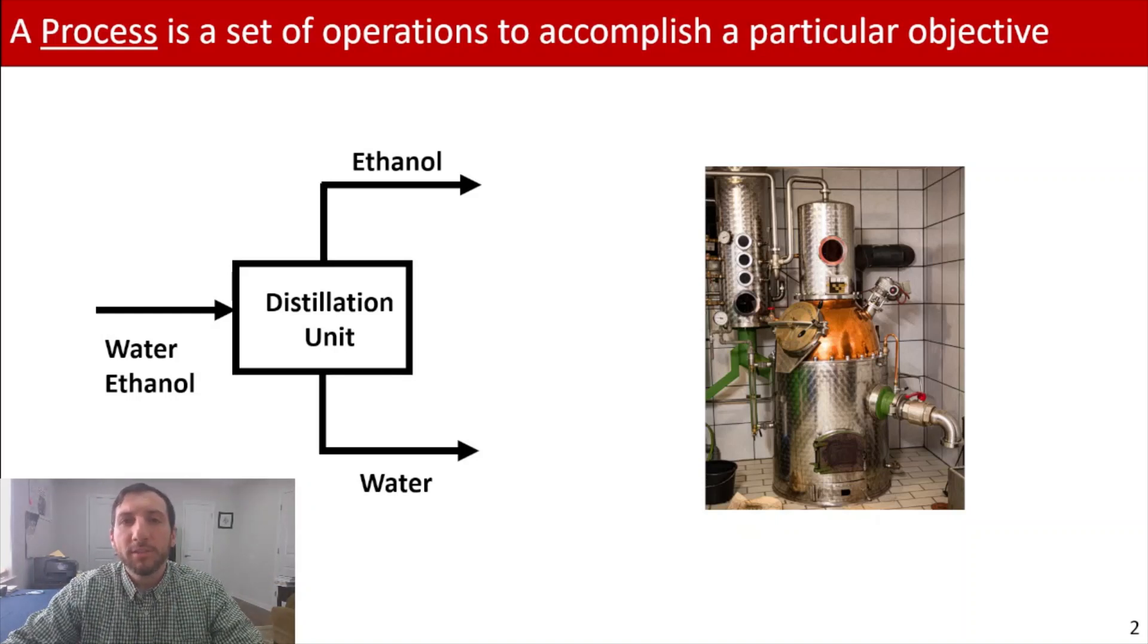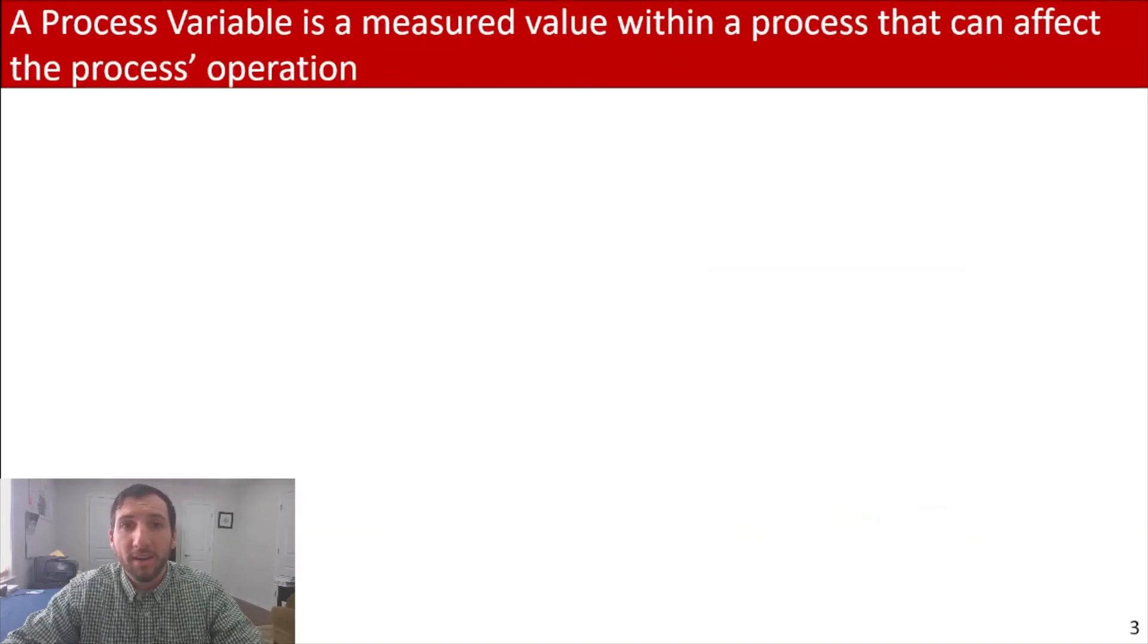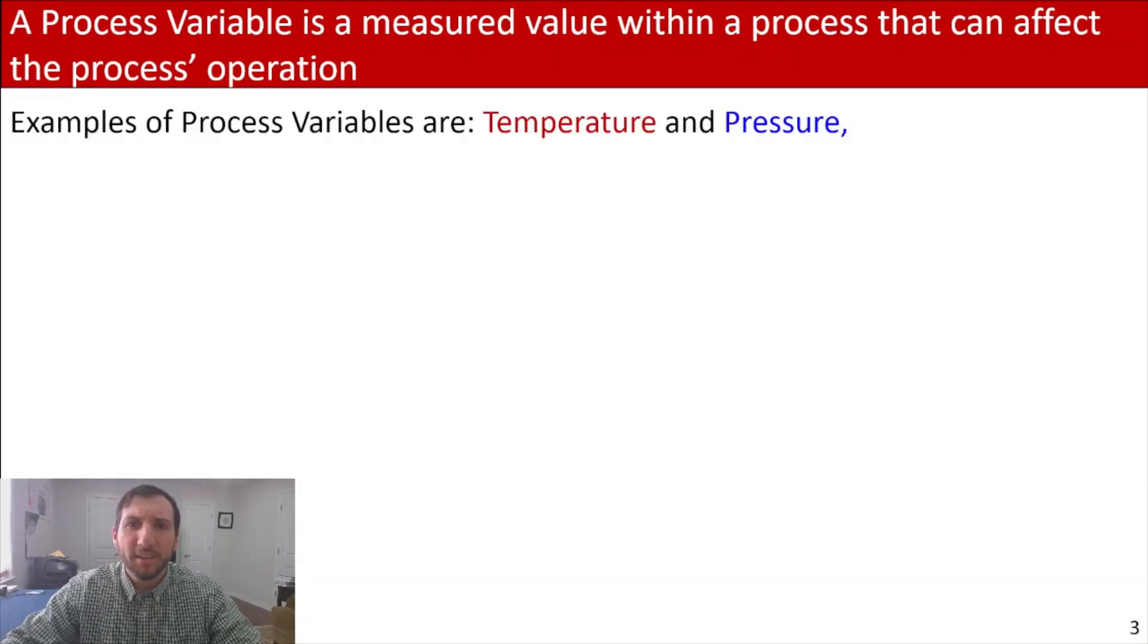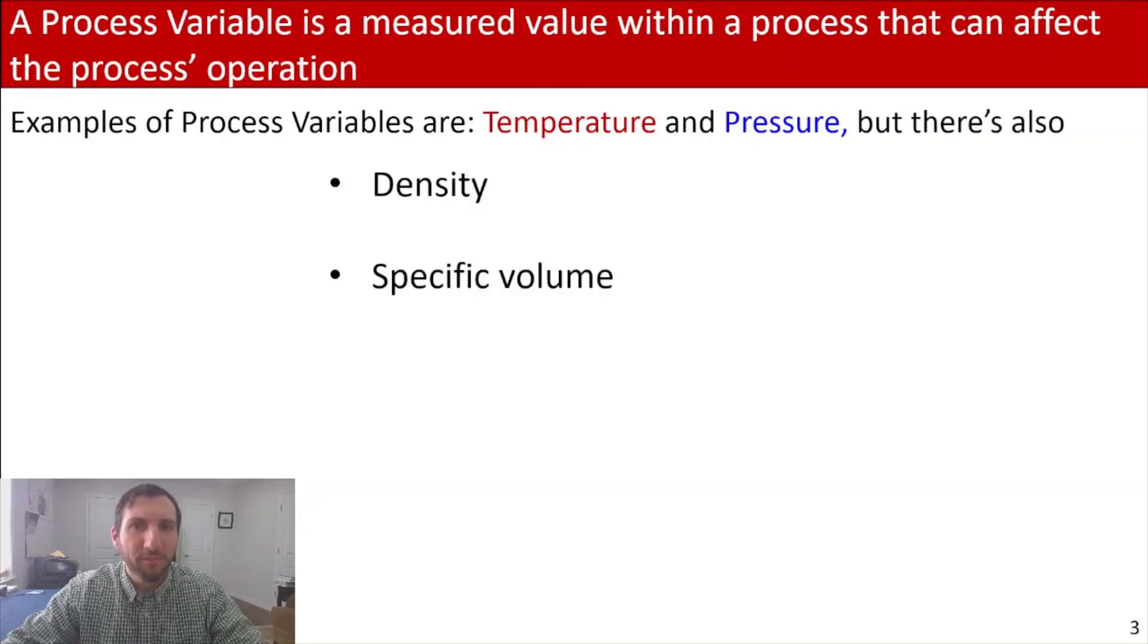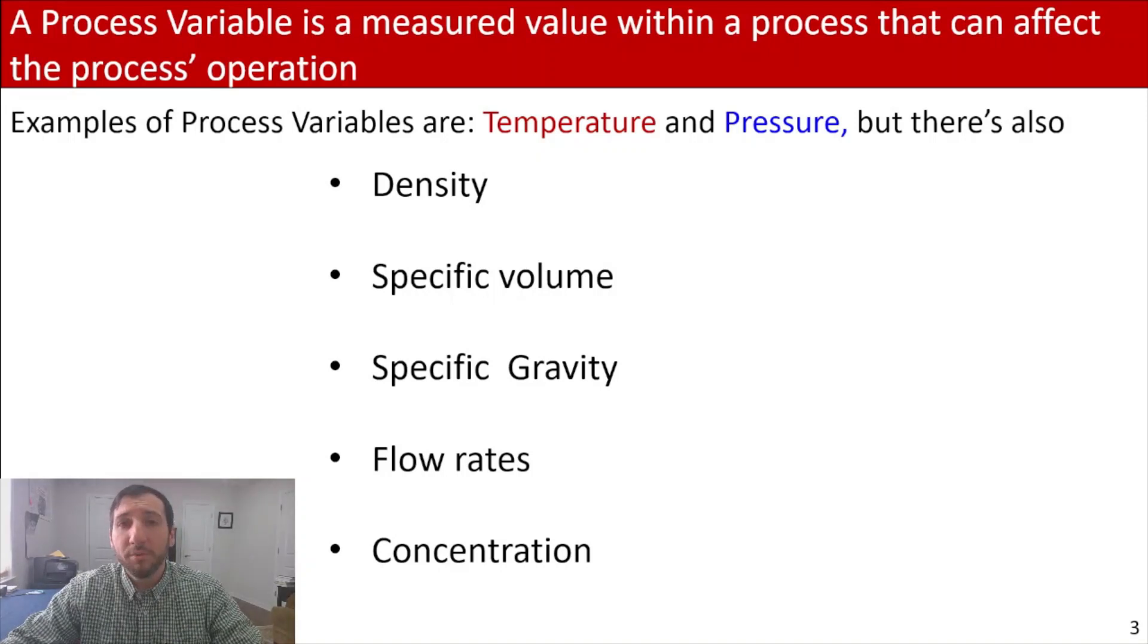Now, when we're operating a process, there's a couple of other items that we may be encountering, which are process variables. And a process variable is a measured value within a process that can affect the processes operation. So examples of process variables are temperature and pressure. But there's also a few more that you may encounter, such as density, specific volume, specific gravity, flow rates, and concentration. And so now what I want to do is spend a little time defining some of these terms.